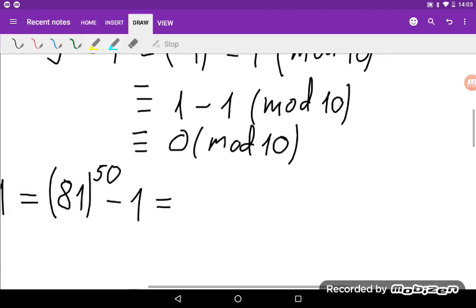And now I have 81 to the power of 50, so that will be some number. Let's say A, B, C, D, E, F and so on. And the last digit of that number will be 1 because 81 to the power of 50, so the last digit will always be 1.